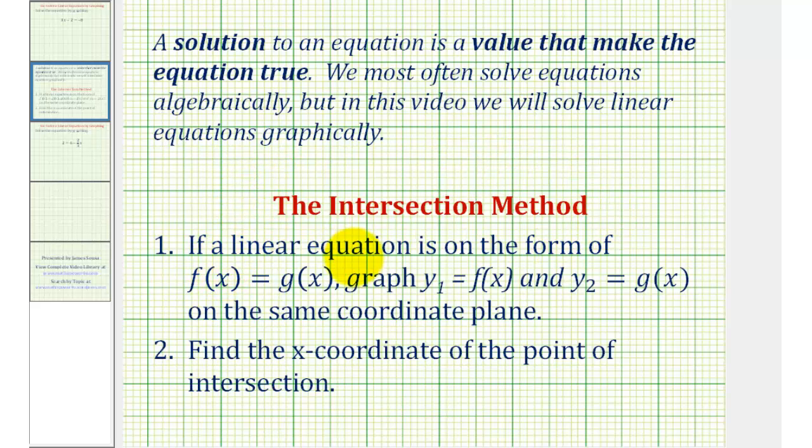So if we have a linear equation in one variable in the form of f(x) equals g(x), then we'll set the left side of the equation equal to y1, the right side of the equation equal to y2, and then graph both linear equations on the same coordinate plane.